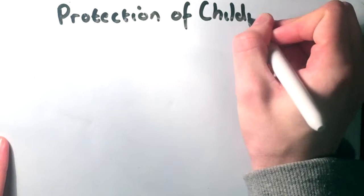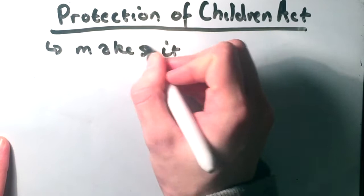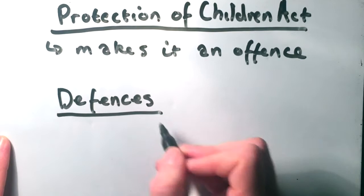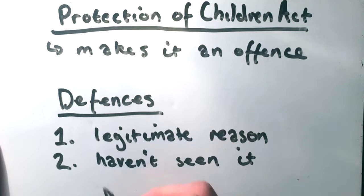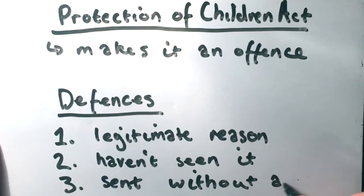There are a couple defenses to this, though. And so the three main elements of a defense have to be that either you have a legitimate reason for possessing the photograph, which we can get into what that means. Two, that you haven't seen the photograph and or you didn't know that the photograph was indecent. And three, the photograph is sent to you without any prior request made and you didn't keep it for an unreasonable time. So this would be sort of like if someone sent you a nude and you didn't ask for it and then just deleted it the second you got it. If you are convicted, you are subject to an imprisonment for a term that's not exceeding five years.